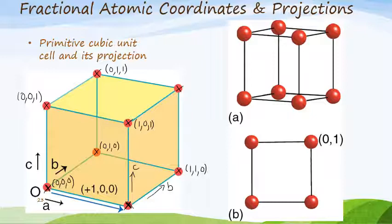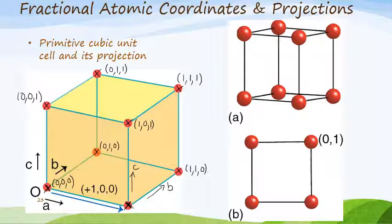Lastly, the final corner: one in a, one in b, and one in c — so that position is one, one, one. Don't learn these by memory — work them out. If I give you a cube in the assessment and ask for fractional coordinate positions, start at the origin and walk in a specific direction, checking whether you've moved in all three directions, only two, or none at all. That's how we work out fractional atomic coordinates.